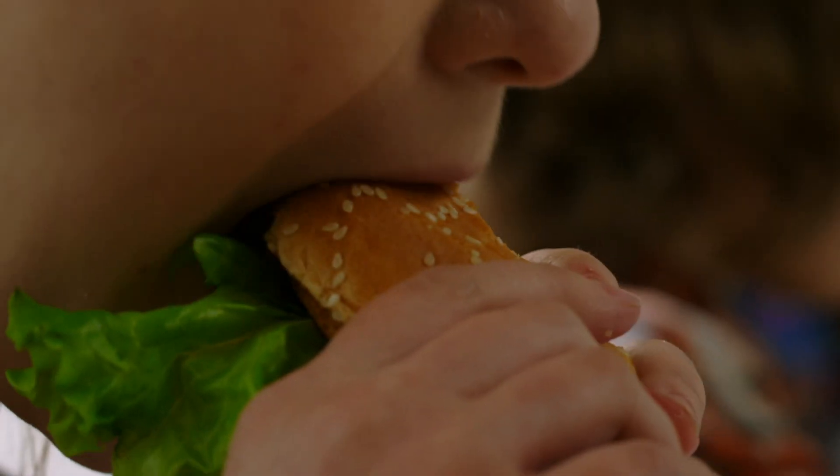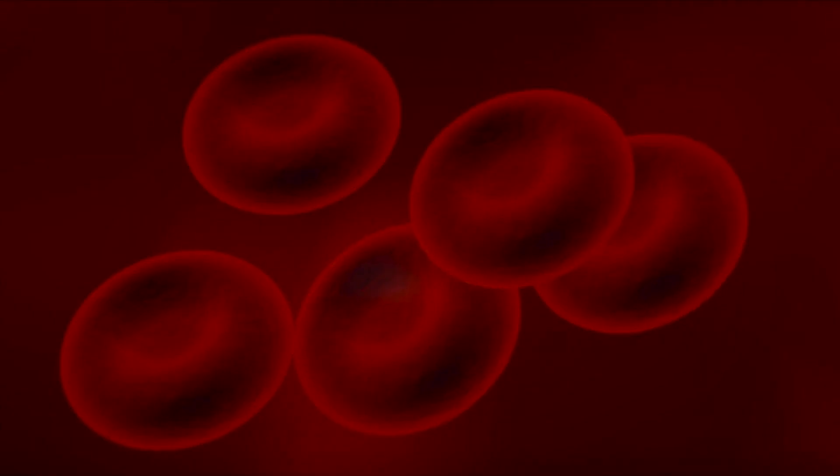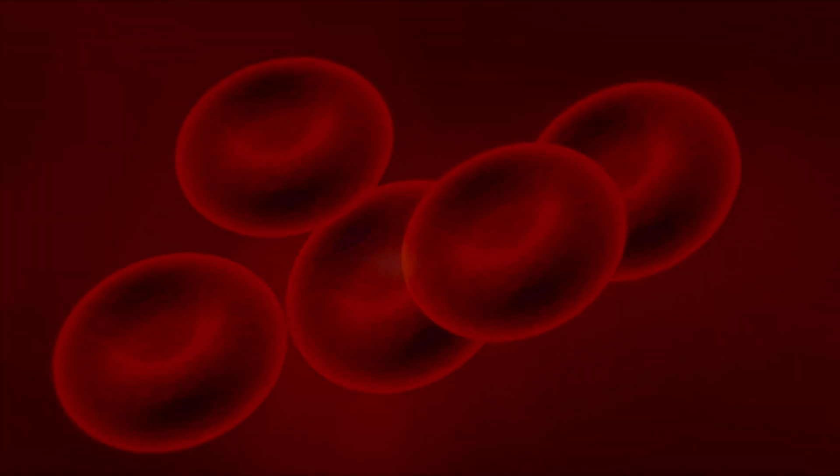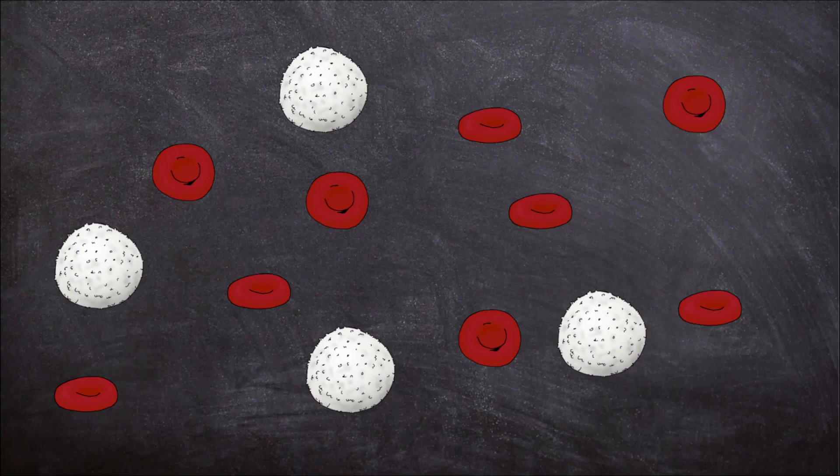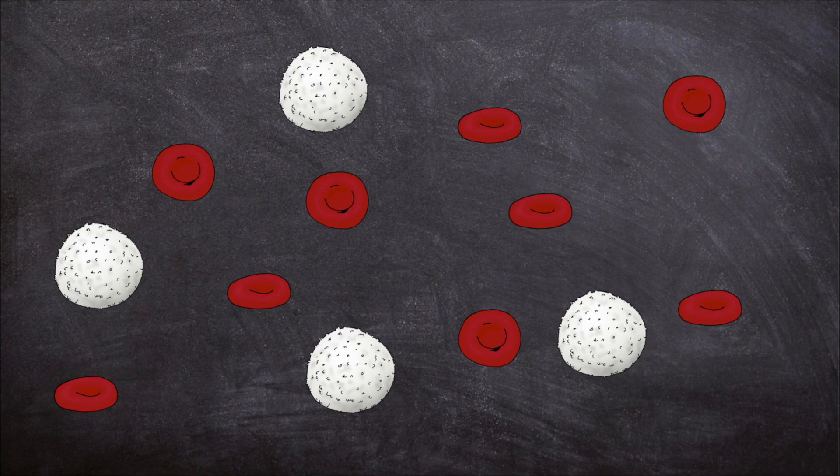Blood carries nutrients from our food and oxygen from the air we breathe to all parts of our body. Blood looks red because it's made of mostly red blood cells. These red blood cells carry oxygen to our cells. The white blood cells in our blood fight off germs and infection.